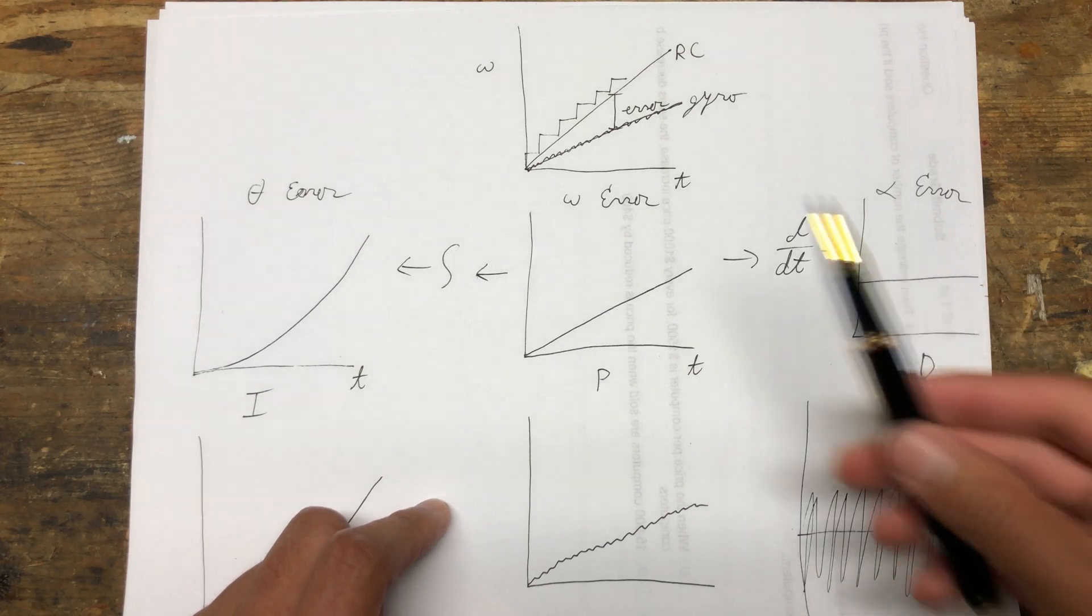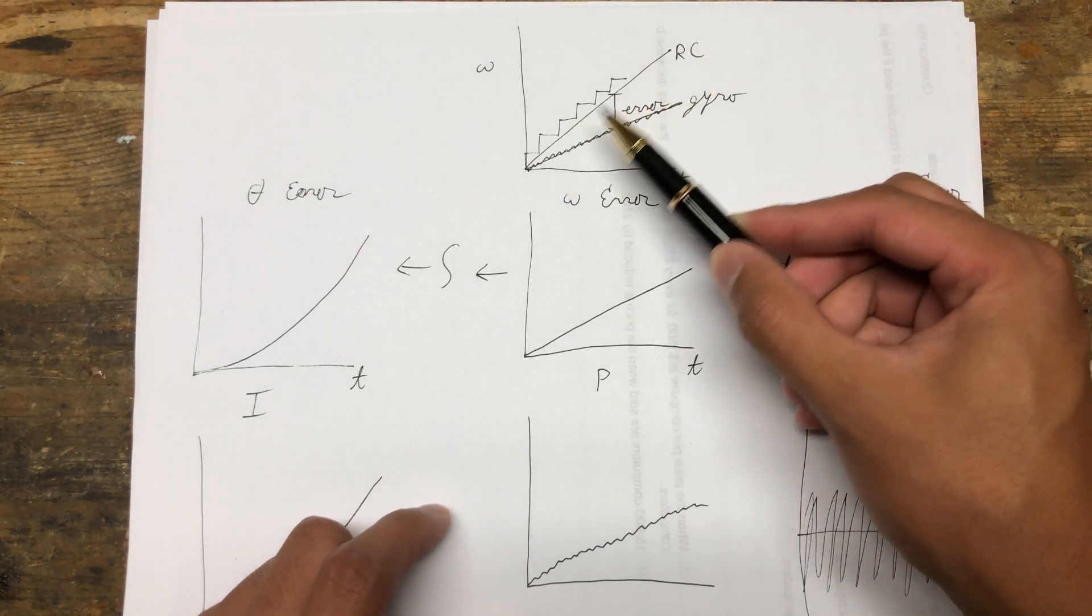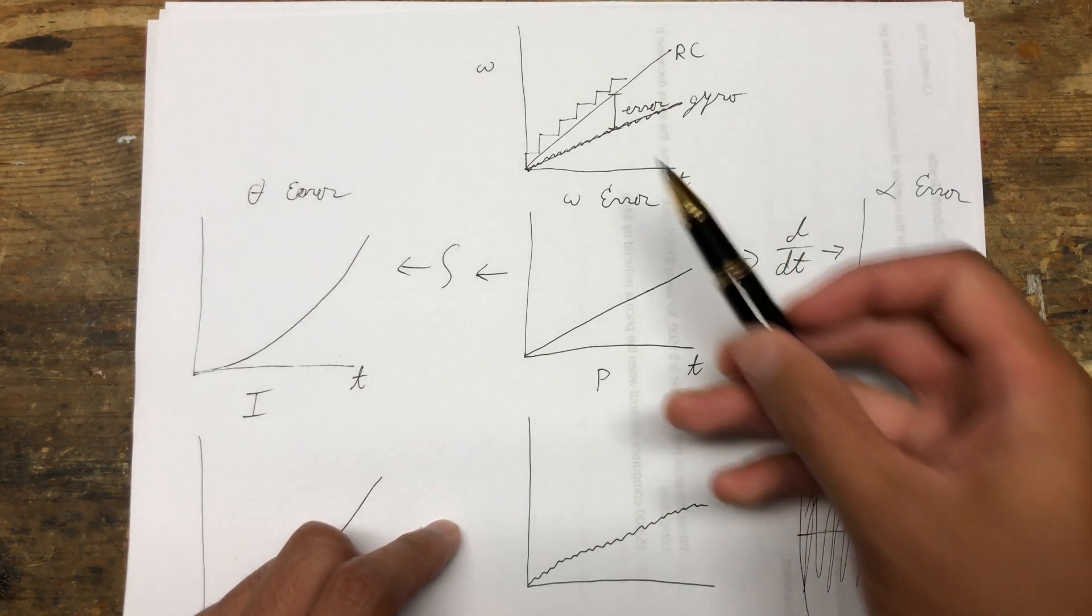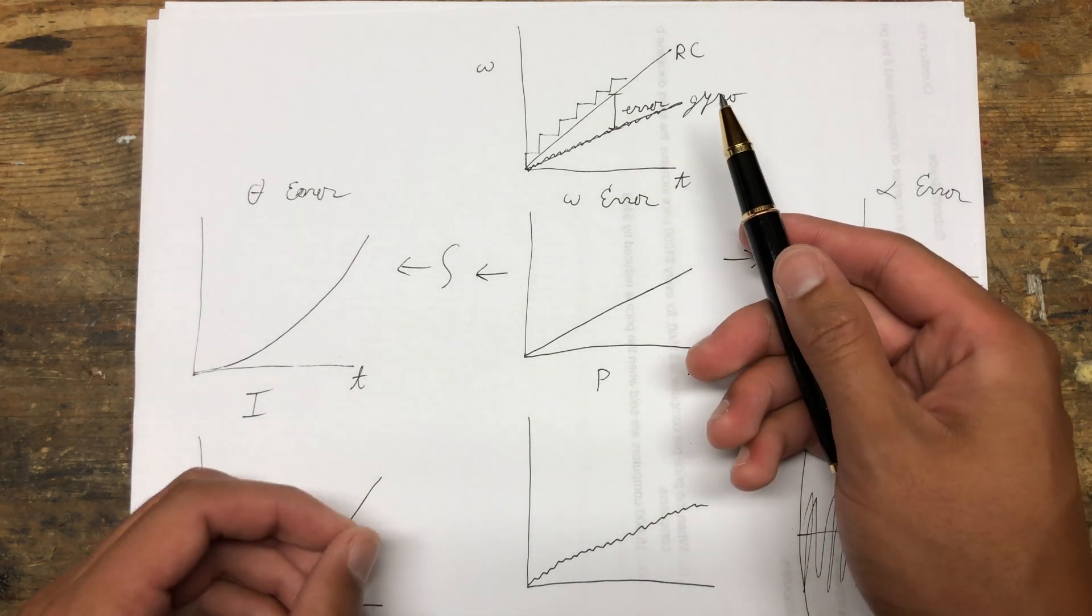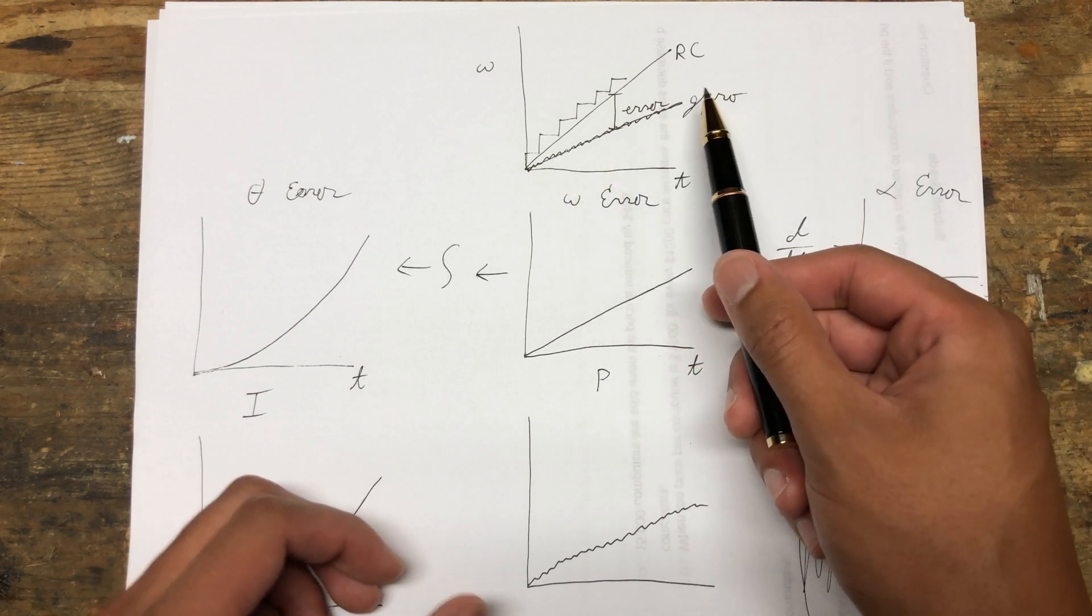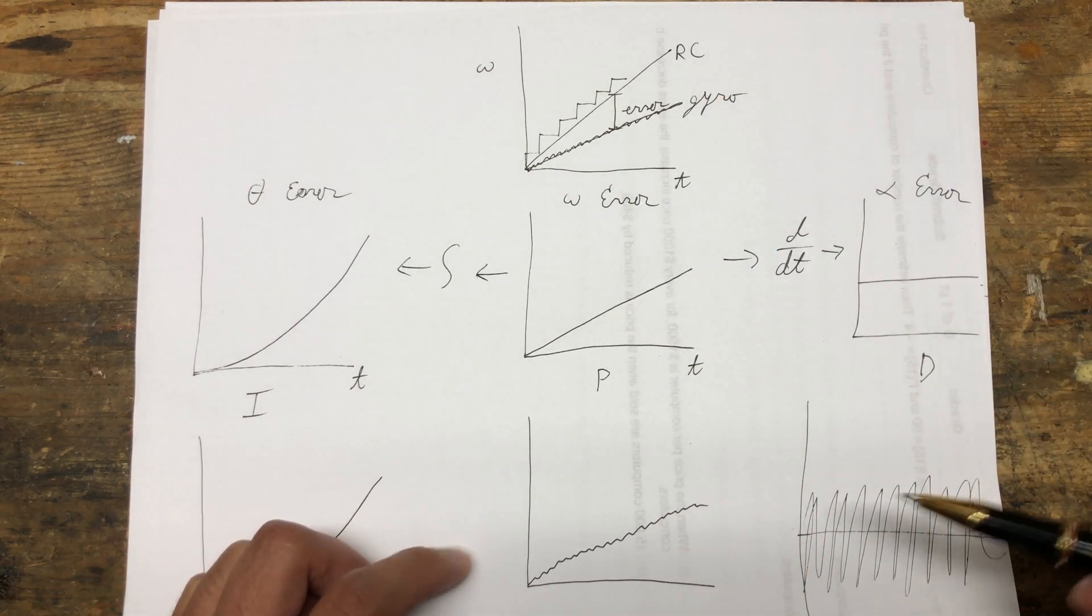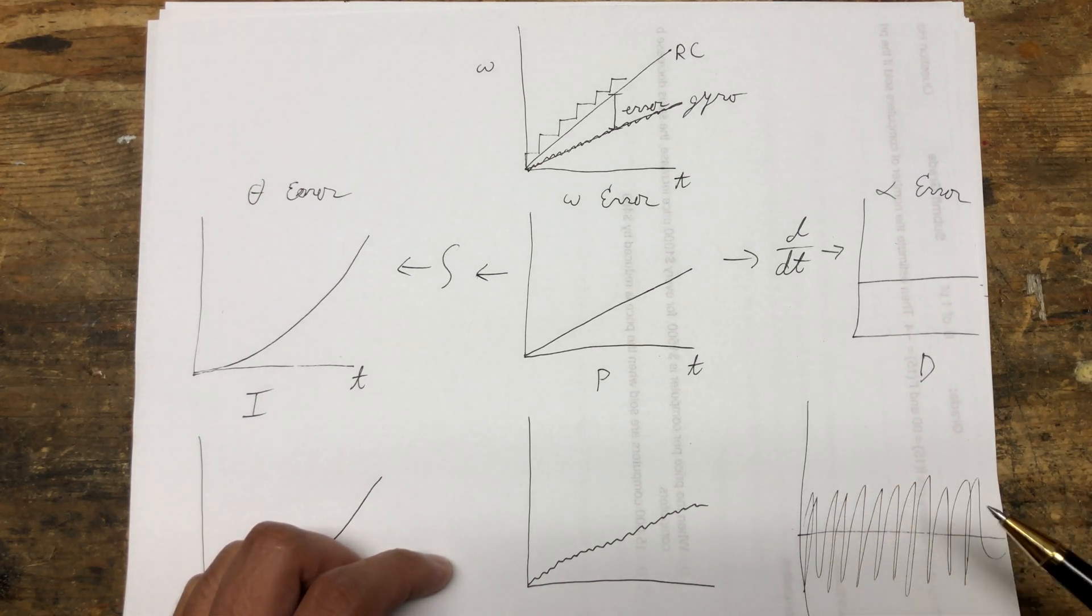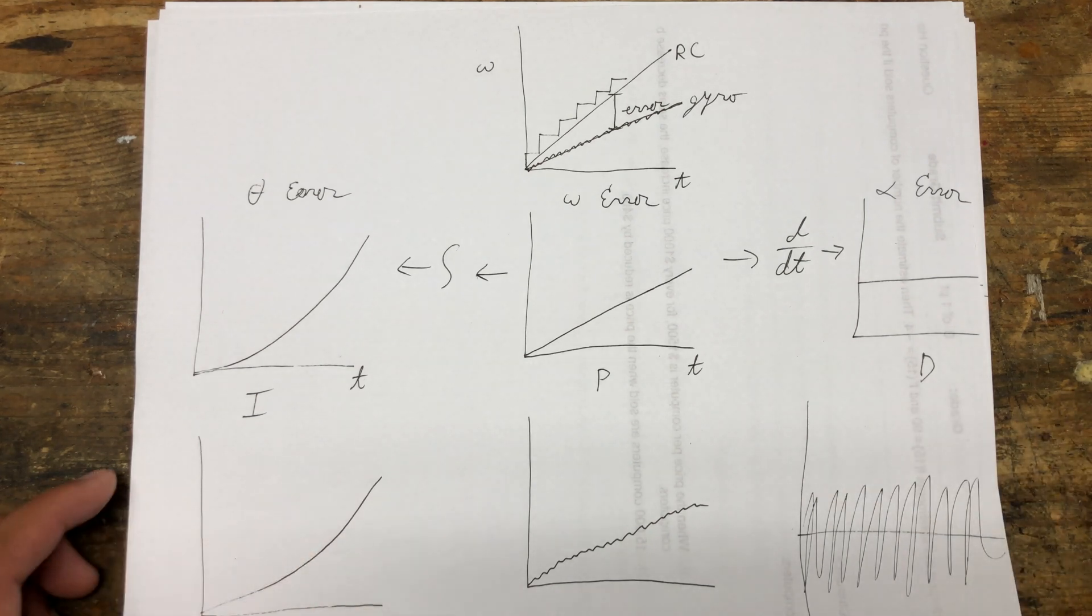That's why in Betaflight, for the RC signal, there is RC smoothing, so that the derivative is very noise-free. There's also, of course, all the different gyro filters. There's notch filters, dynamic notch filters, RPM filters, etc. In Betaflight itself, the D-term has a separate filter just to deal with the potential amplification of noise that can occur with the D-term specifically.